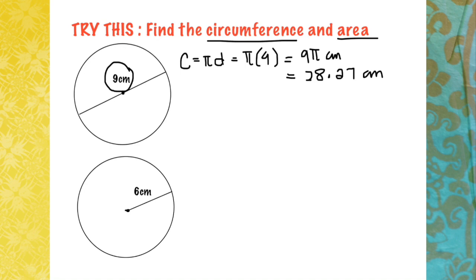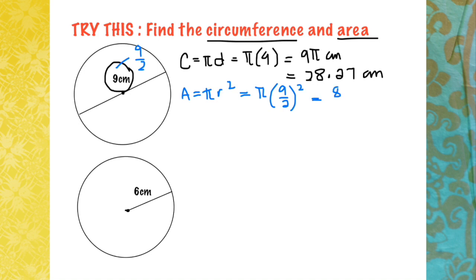Now for the area, using A = πr². Since we are given diameter 9, we divide by 2 to get 9/2 as our radius, so that we get the exact value. Substituting, we have π times (9/2)². Our exact value will be 81/4 π cm², or the estimated value of approximately 63.62 cm².